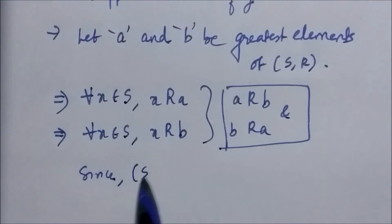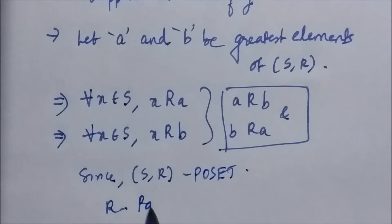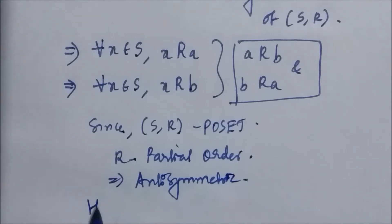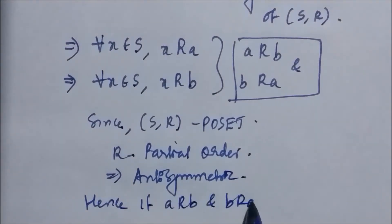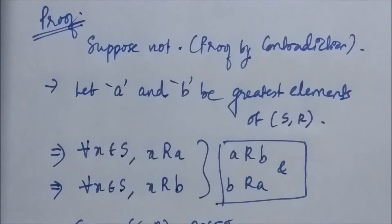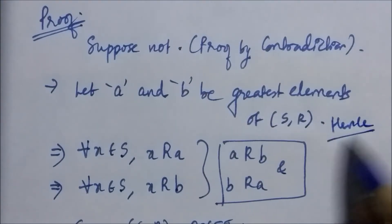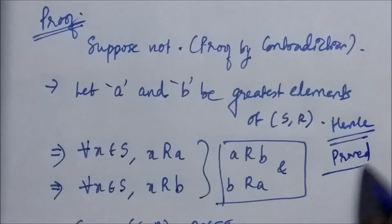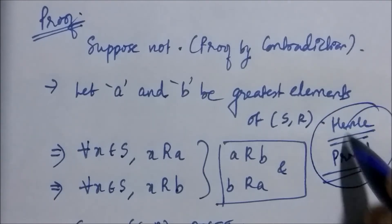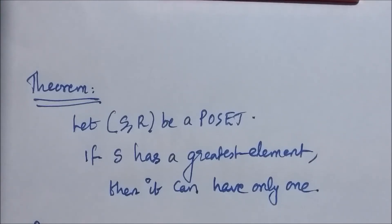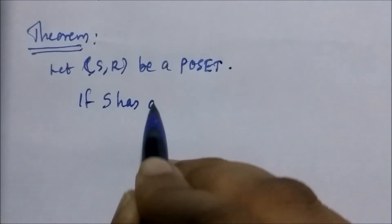Now since (S, R) is a partially ordered set, R is also anti-symmetric. Anti-symmetry means whenever a is related to b and b is related to a, it implies a equals b. Since we have both a related to b and b related to a, it must be the case that a equals b, meaning there is only one greatest element if it exists. In a similar manner we can prove that the least element is also unique if it exists.